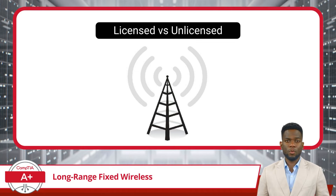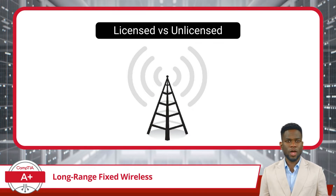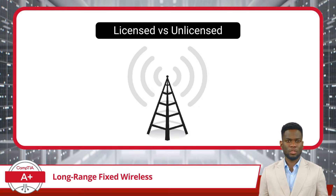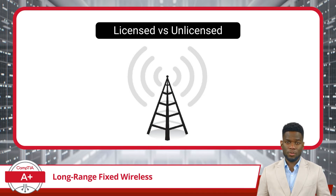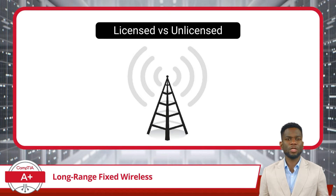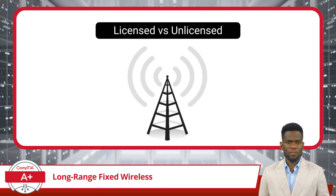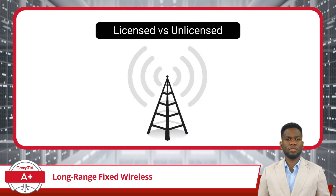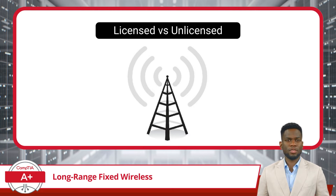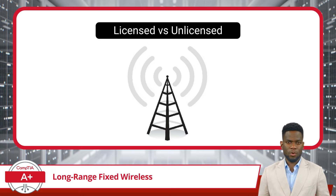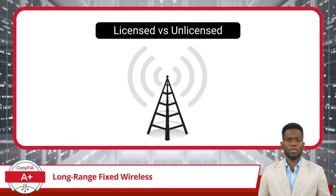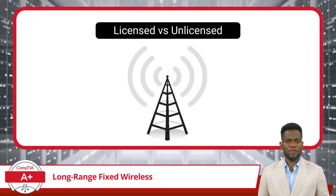Diving deeper, we encounter two types of Long-Range Fixed Wireless connections: licensed and unlicensed. Licensed connections require authorization from regulatory bodies — you're essentially renting a portion of the radio spectrum. This exclusivity means less interference and more reliable connections, often used by businesses for critical communications. Unlicensed connections, on the other hand, are free to use without a license, like Wi-Fi. While they are more accessible, they are also more susceptible to interference from other devices using the same frequency bands.